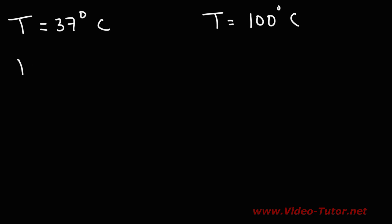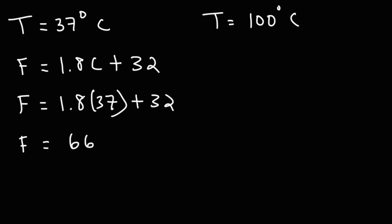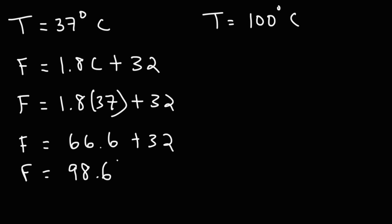So let's start with the first example. The Fahrenheit temperature is going to be 1.8 times the Celsius temperature plus 32. Let's begin by replacing C with 37. 1.8 times 37 is 66.6. And then we'll add 32 to that, so we get a Fahrenheit temperature of 98.6 degrees.